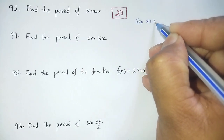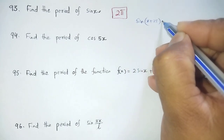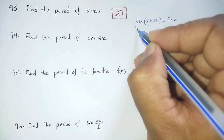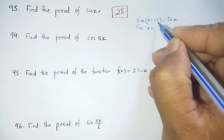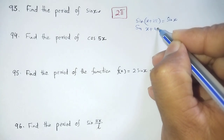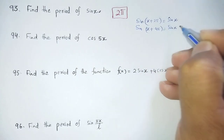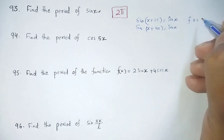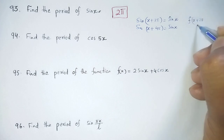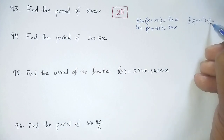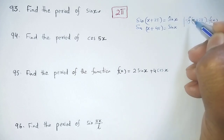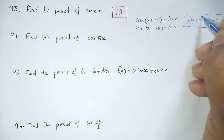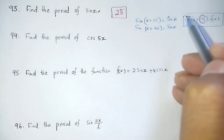sin(x + 2π) gives the result sin(x). If we apply sin(x + 4π), the result is still sin(x). So f(x + 2π) = f(x). This means 2π is the period of this function.